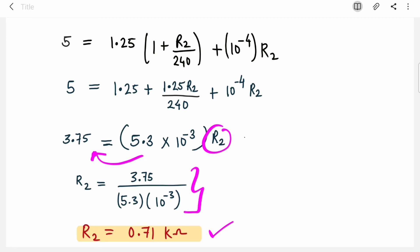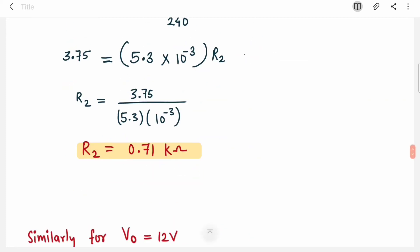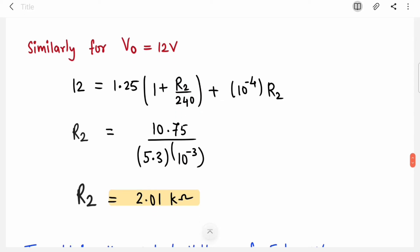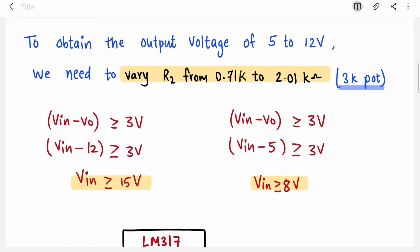Similarly for 12 volts, you will again put 12 here. Rest of the things are same. You will find the value of R2 for 12 volts. To obtain output voltage of 5 to 12 volts, you need to vary that potentiometer R2 from 0.7k to 2.01k, so you will need a 3k pot.